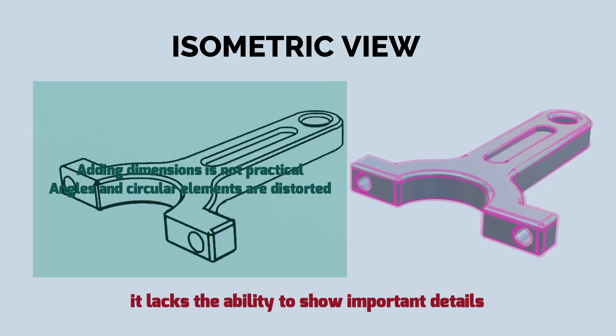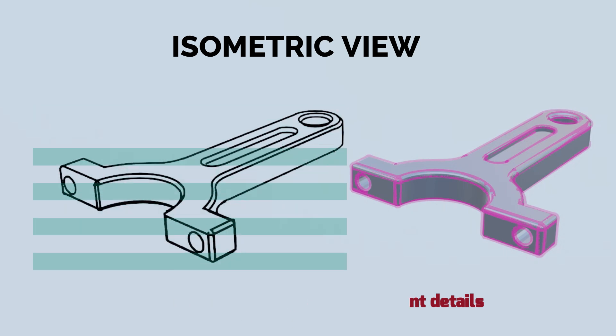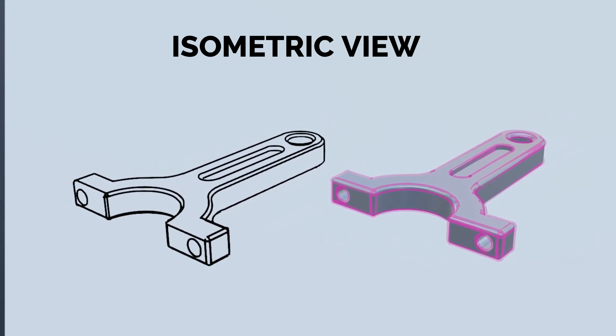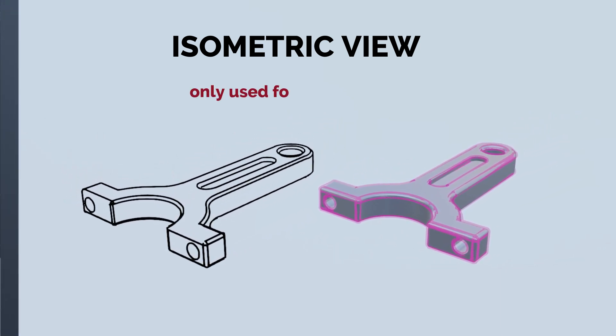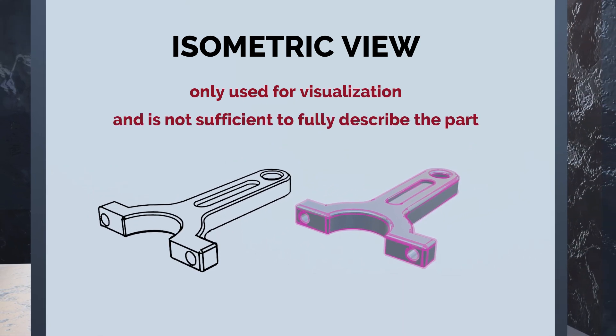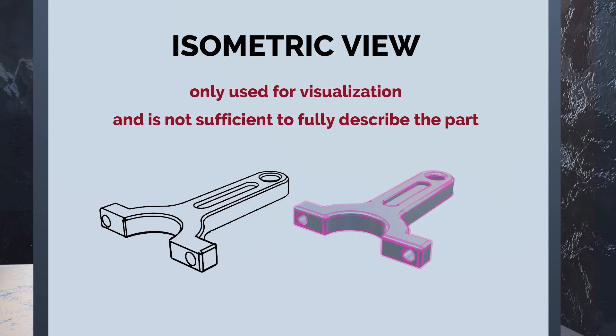Also, the angles and circular elements are distorted. So although it is helpful and recommended for every drawing to have an isometric view, it is generally only used for visualization and is not sufficient to fully describe the part and needs to be complemented with orthographic views.